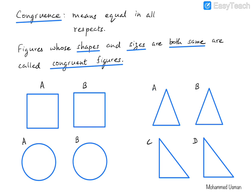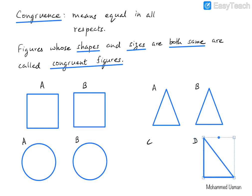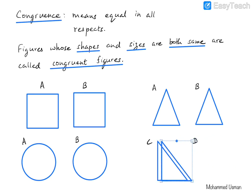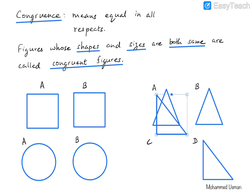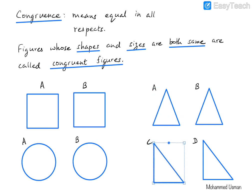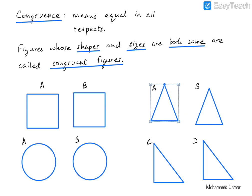Similarly, triangles C and D are also congruent with respect to each other. But if we check congruence between triangle A and triangle C, they are not congruent, because if we take triangle C and put it on top of triangle A, they do not cover each other. Triangle B and D are also not congruent, whereas A and B are congruent and C and D are congruent.